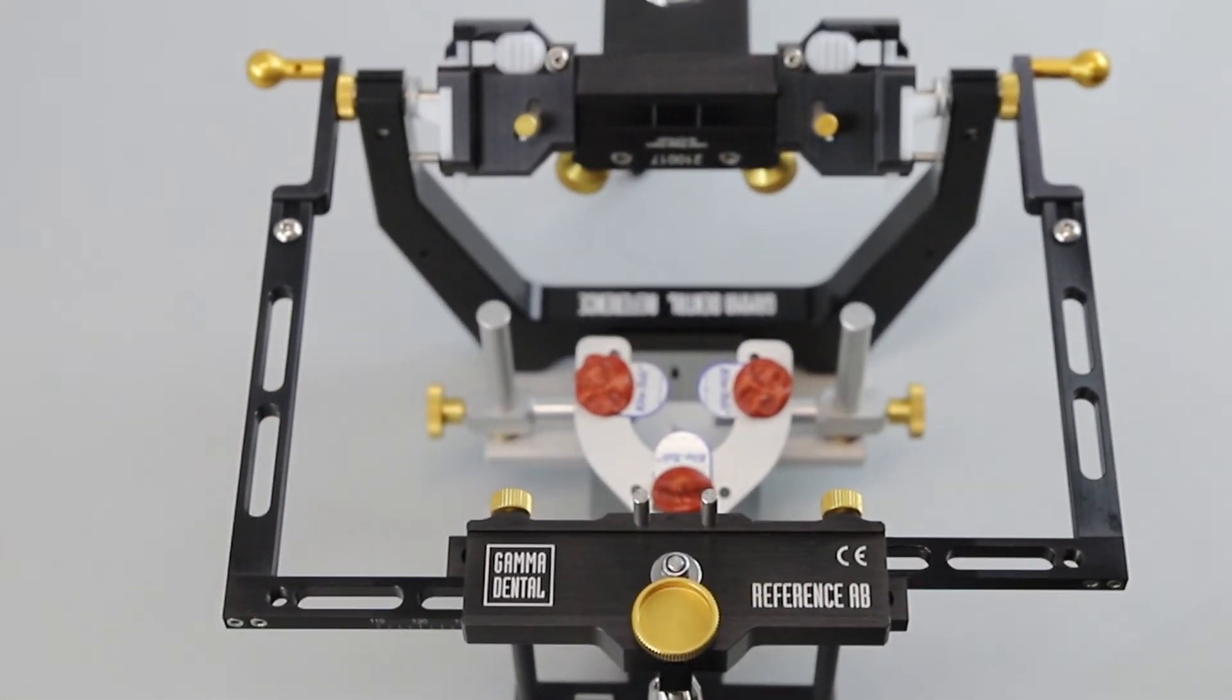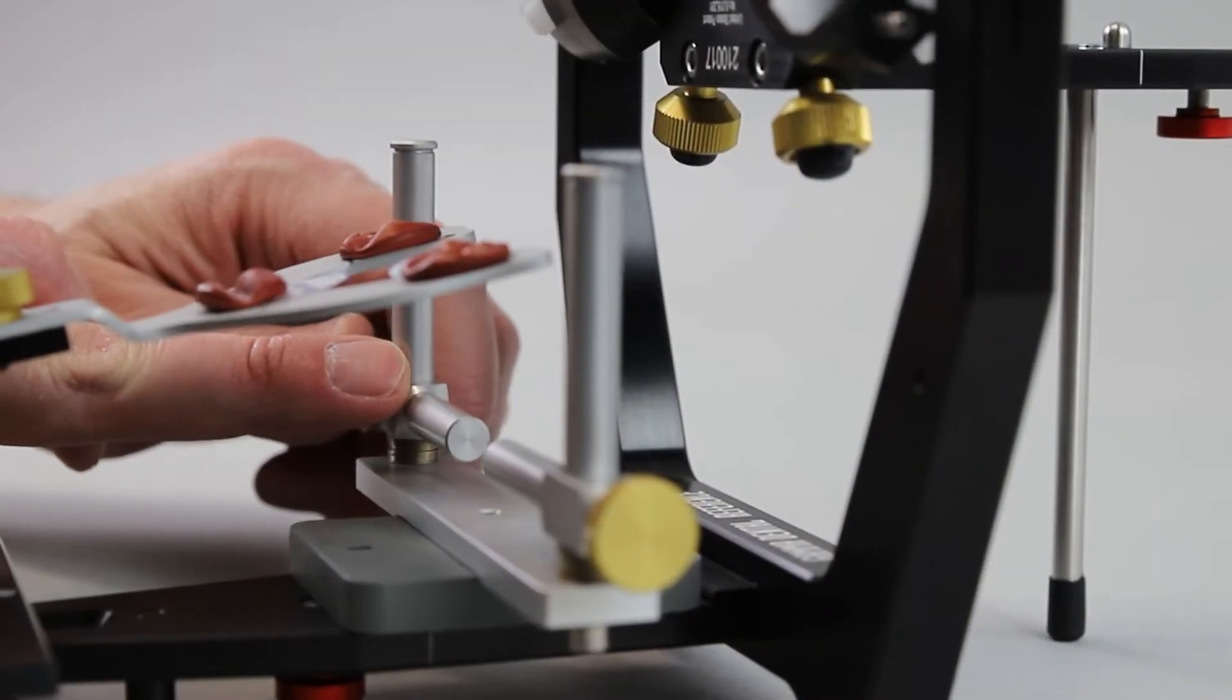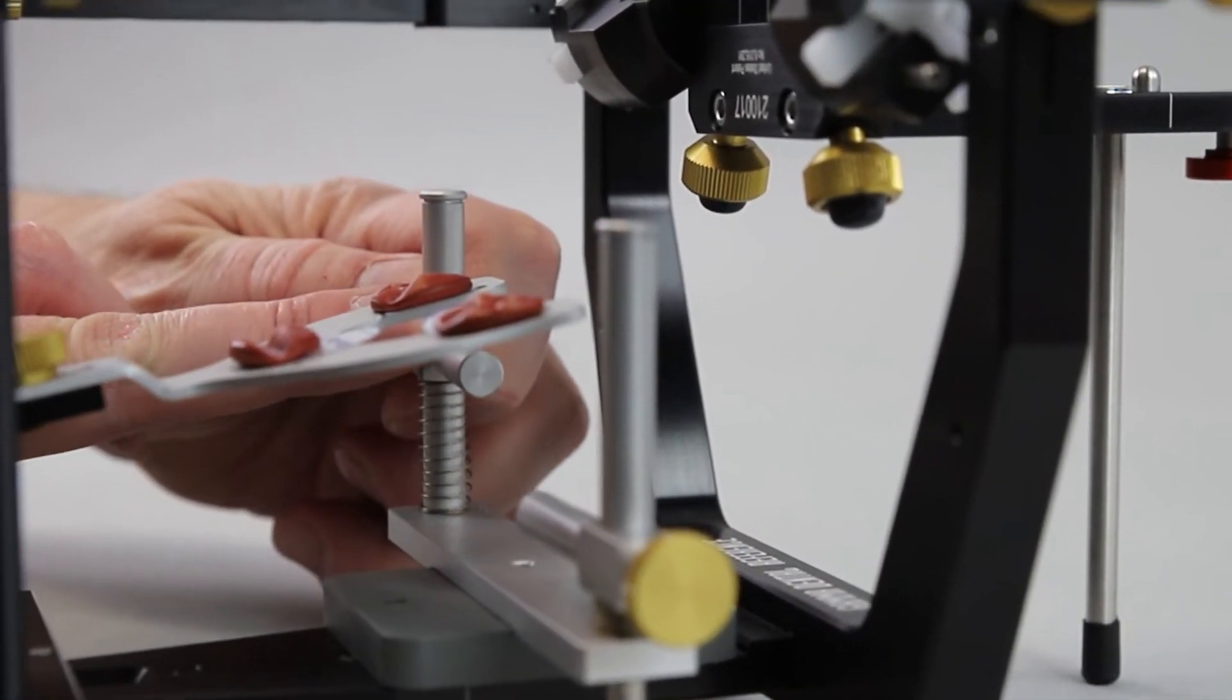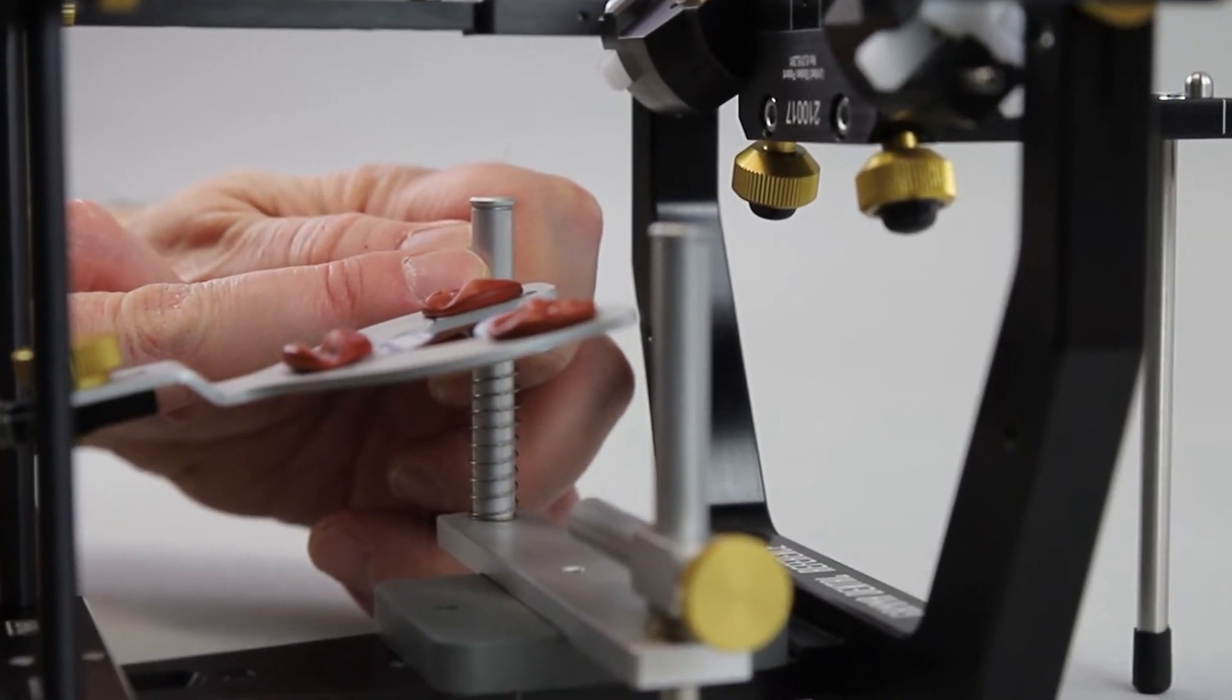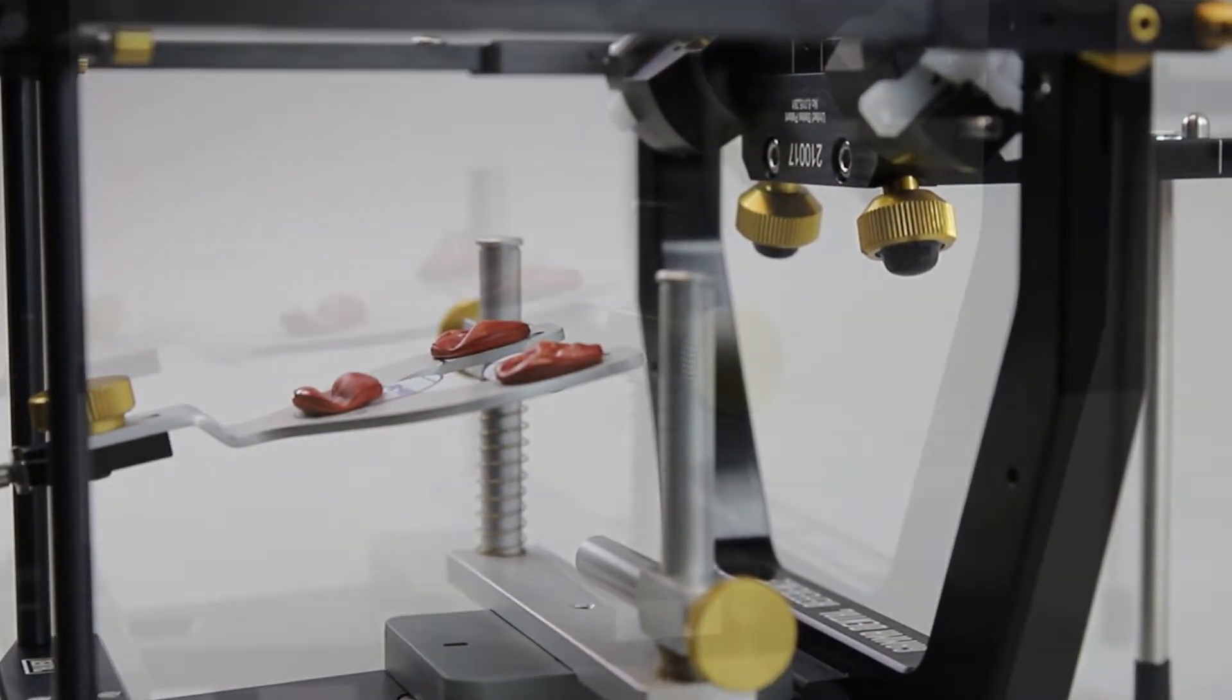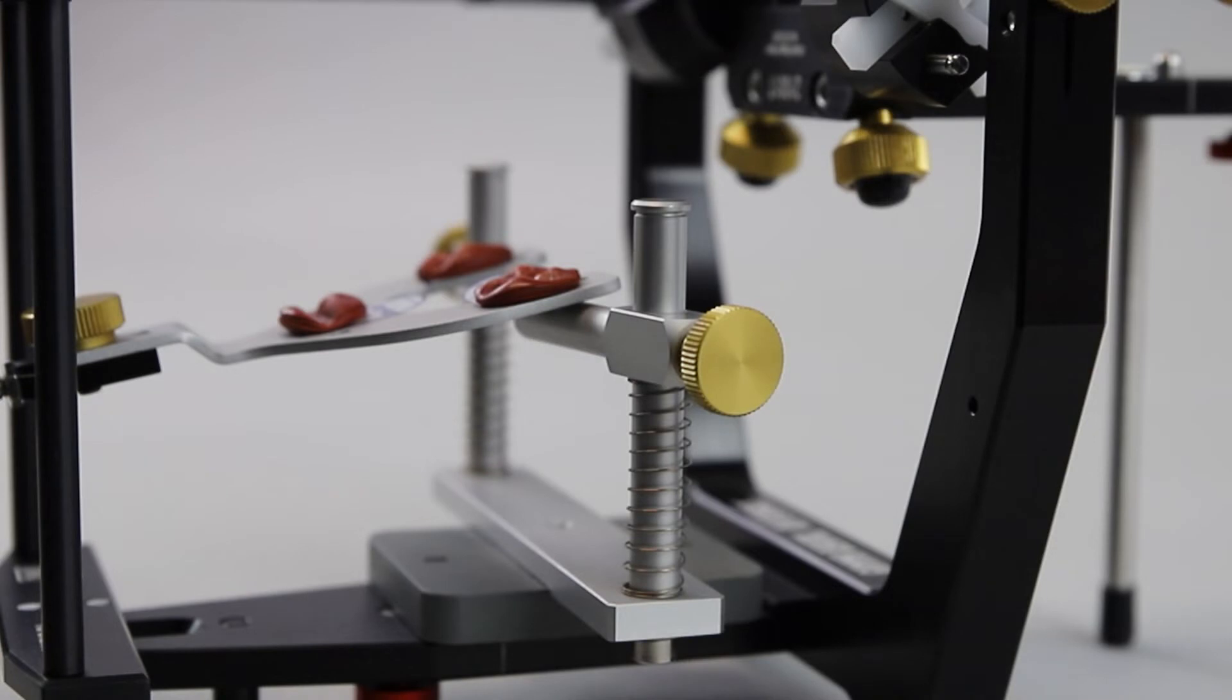Carefully move the bars of the bite fork upwards until they touch the bite fork, then they are fixed. The position of the bite fork must not be changed in this process.